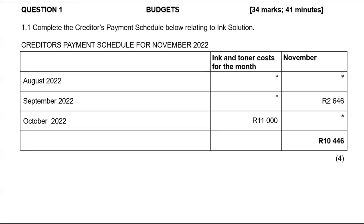We have to use that to complete all the amounts indicated with a star. I will start by calculating the first star, and I'll start with October. For October 2022, I am given credit purchases amounting to $11,000. That column simply is the cost price of your credit purchases. Only credit purchases will be recorded in the creditor's payment schedule.